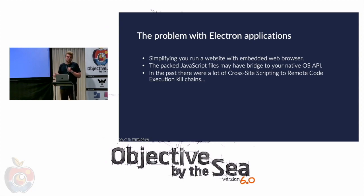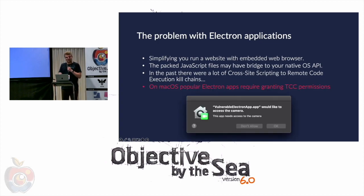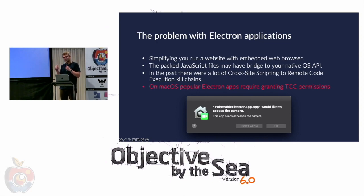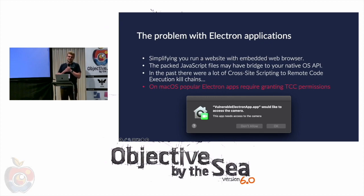But this isn't a talk about web security, so we won't focus on XSS vulnerabilities. On macOS, Electron applications will usually require granting TCC permissions. For example, Microsoft Teams will be asked for access to camera, microphone, and screen sharing. Visual Studio Code will often be given access to your Desktop and Downloads folders. I even know developers who gave Visual Studio Code full disk access because it's more convenient.